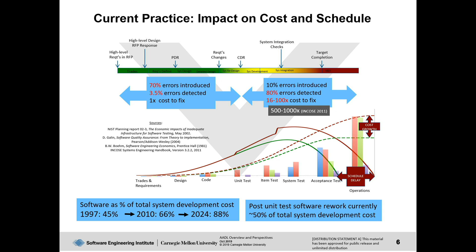Looking at trend figures from the aircraft industry: in 1997, embedded software systems made up 45% of total system development cost. By 2010 it was already up to 66%. If you don't make changes to the process, it will be 88% by 2024. Given today, we are spending 50% of our total system development cost on post-unit test rework — a great opportunity to improve the process.